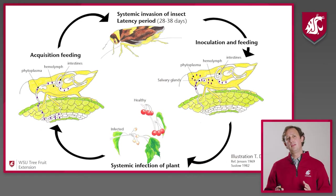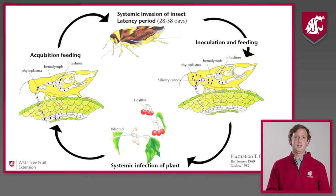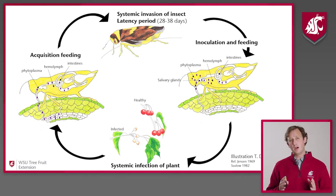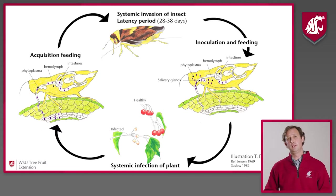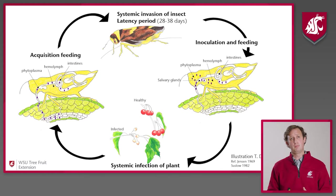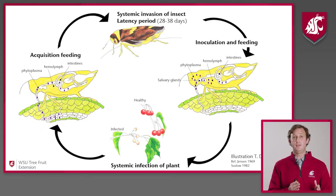A question I get asked a lot is why don't other leafhoppers transmit X disease phytoplasma, and how can we be certain of this? There are a few key barriers. The first is that it has to be feeding on the right part of the plant. Some leafhoppers like sharpshooters actually feed on the xylem, so they wouldn't come into contact with the phytoplasma in the phloem.